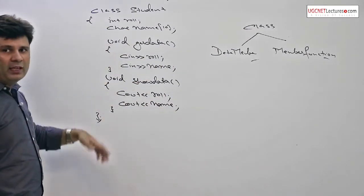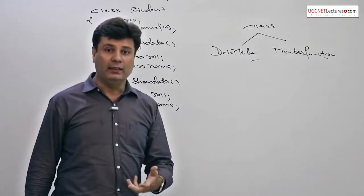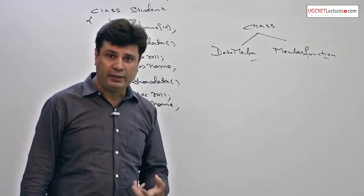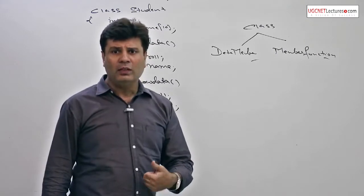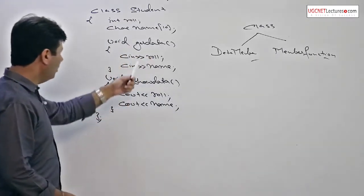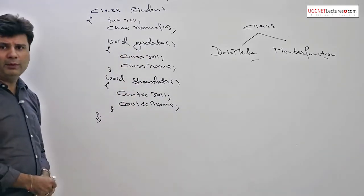And as you know, everything is hidden, everything is private by default within a class. So let's try how to call get data and show data from the main function.